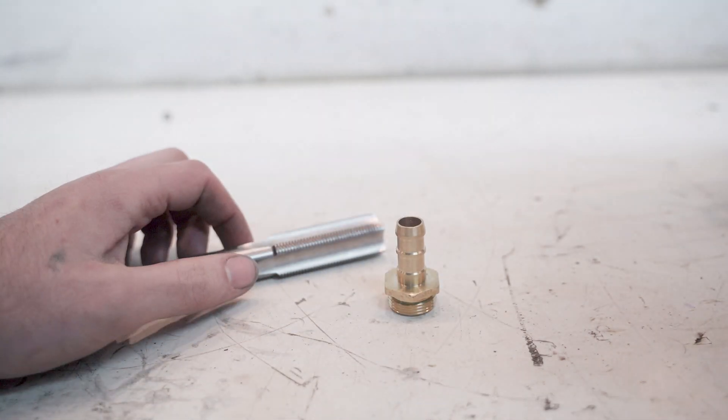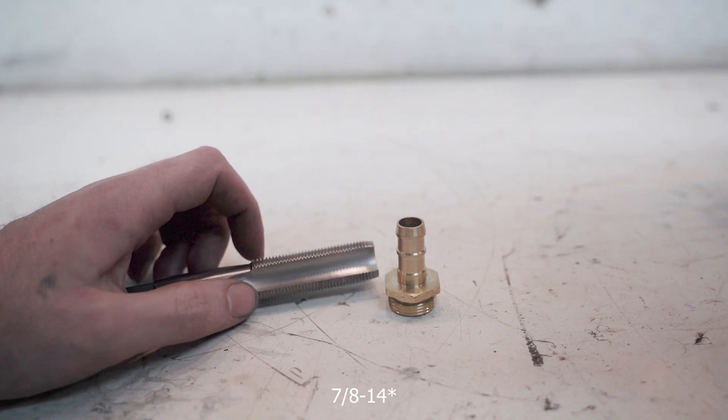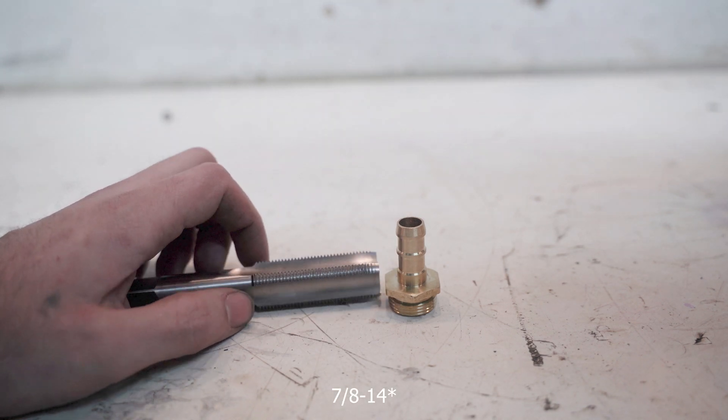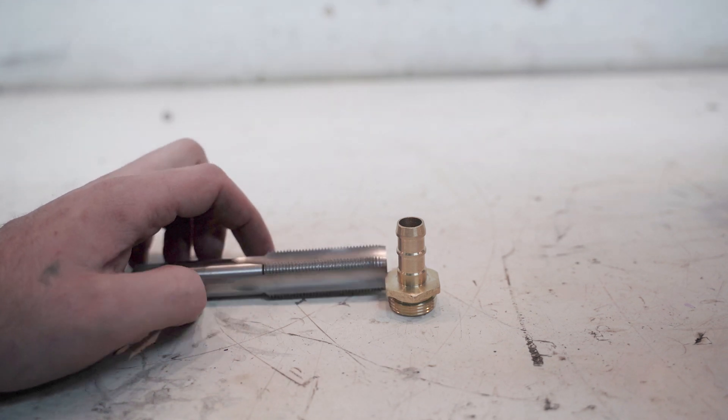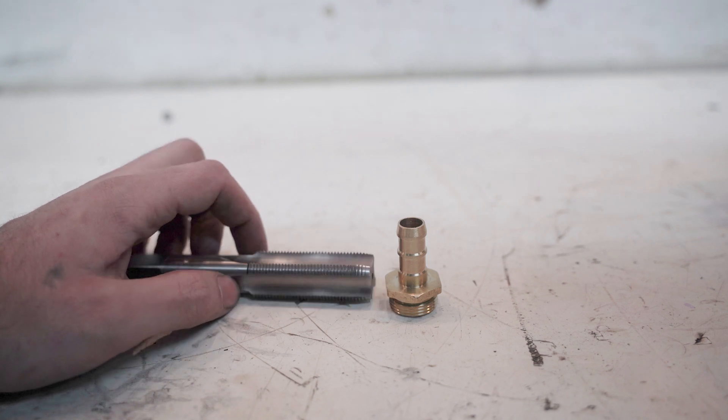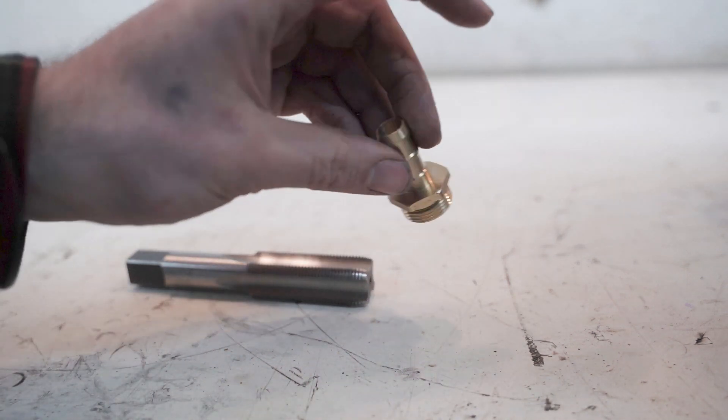The other size tap that works is a standard tap—I forgot the exact size, but it's the same thread as a 10AN for AN fittings. That was my backup plan if this fitting looked like junk, but it looks like it'll work.